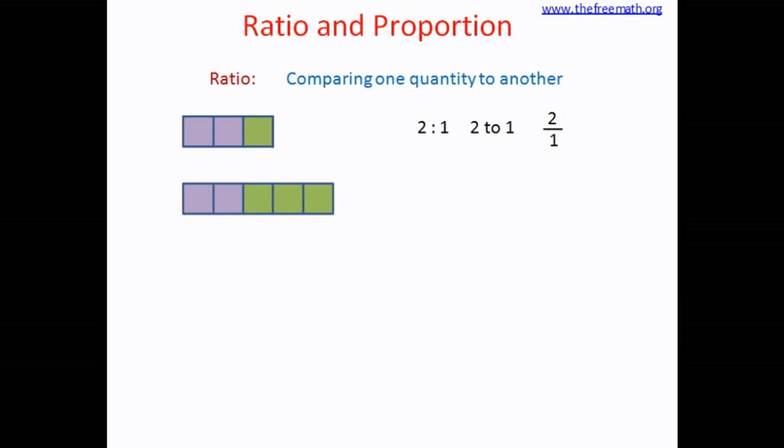Let's look at one more picture. Now in this picture if you want to compare the purple squares to the green squares, you can say that there are two purple squares to three green squares and you can write like this: 2 colon 3 or 2 to 3 or 2 over 3. So these are the different ways to write a ratio.